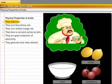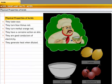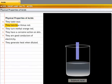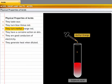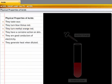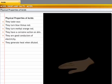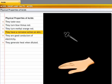We already know that acids taste sour. Acids also have other physical properties. Acids turn blue litmus red. They also turn methyl orange red. Acids have a corrosive action on the skin. Sulfuric acid stains the skin black, nitric acid stains the skin yellow, and hydrochloric acid leaves an amber stain on the skin.